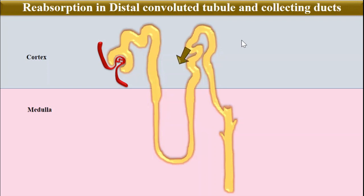The early part of the distal convoluted tubule reabsorbs around 5% of the filtered load of sodium. Along with sodium, other electrolytes such as chloride, magnesium, and calcium are also reabsorbed.